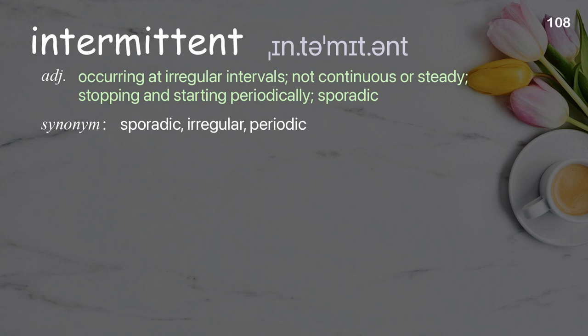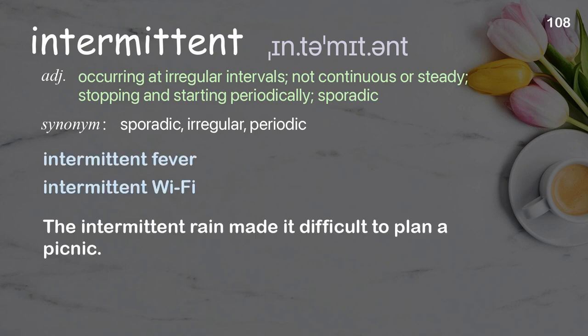Intermittent: occurring at irregular intervals; not continuous or steady; stopping and starting periodically; sporadic. Examples: intermittent fever, intermittent wifi. The intermittent rain made it difficult to plan a picnic.